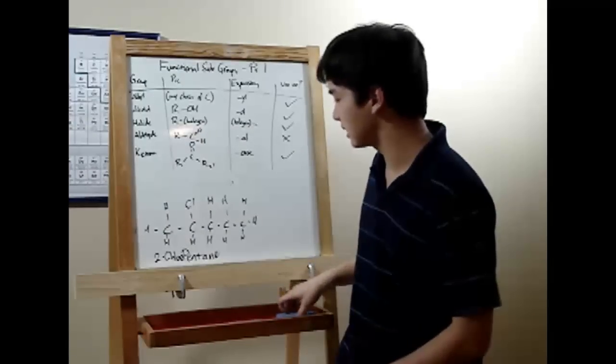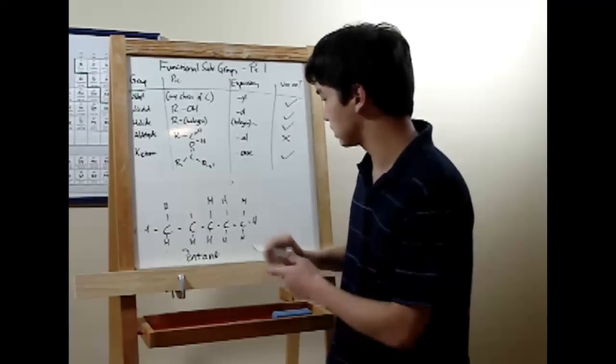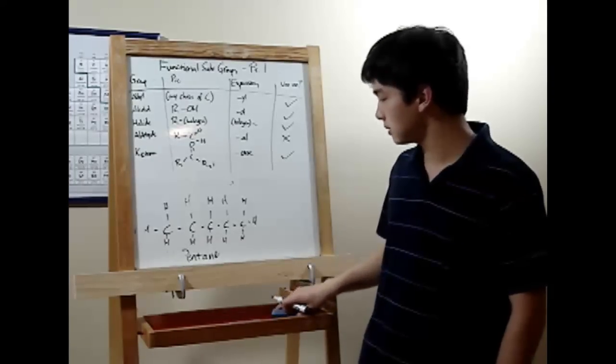All right. Next up is the aldehyde. Aldehyde is a carbon double bonded to an oxygen, single bonded to a hydrogen. These are always going to occur at the end of your chain. So let me just put one in right now.